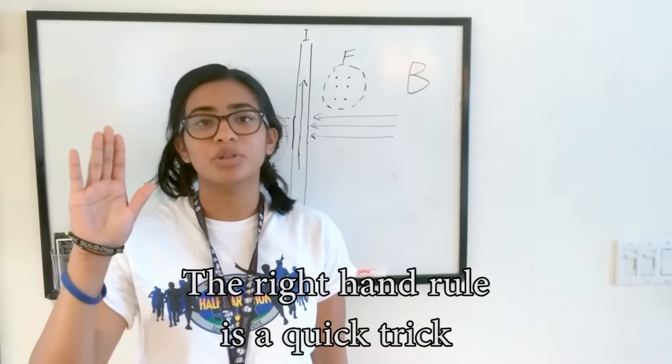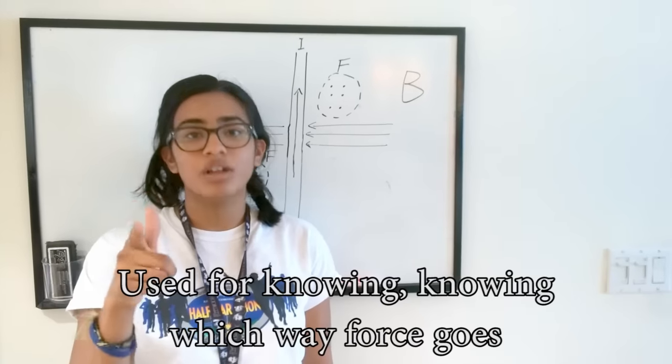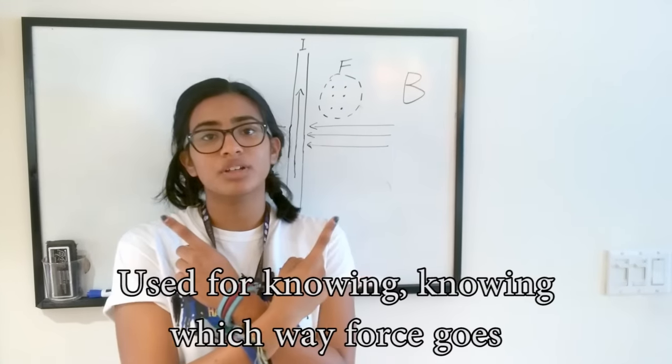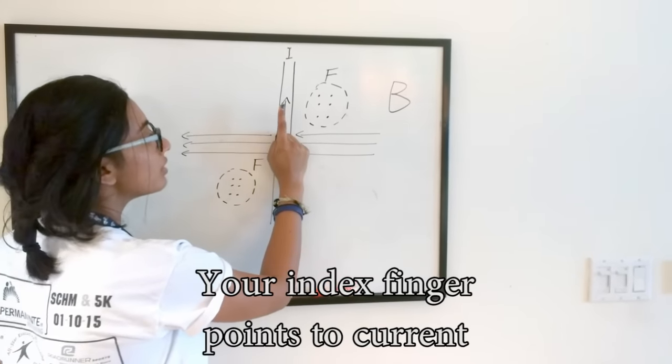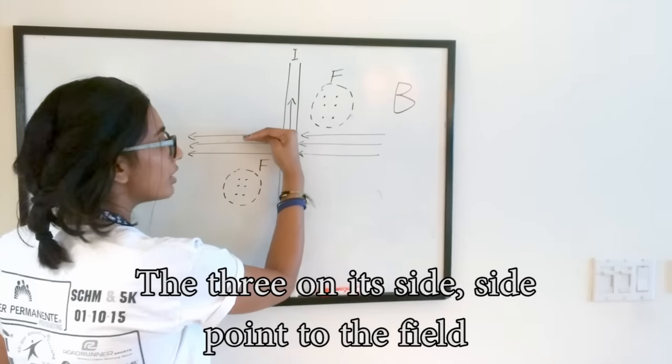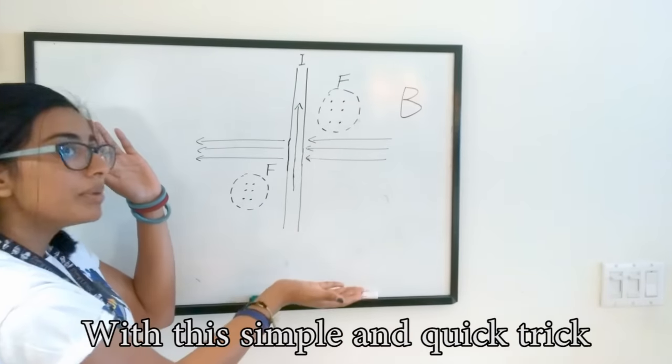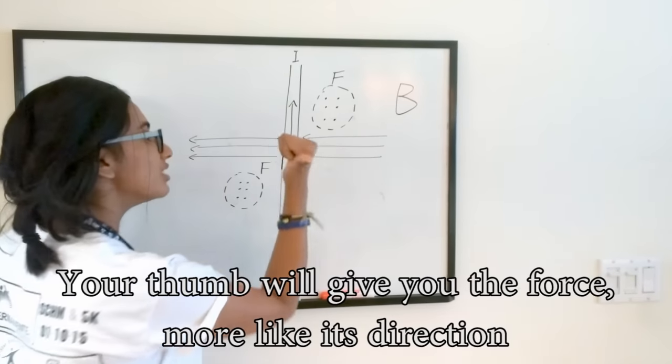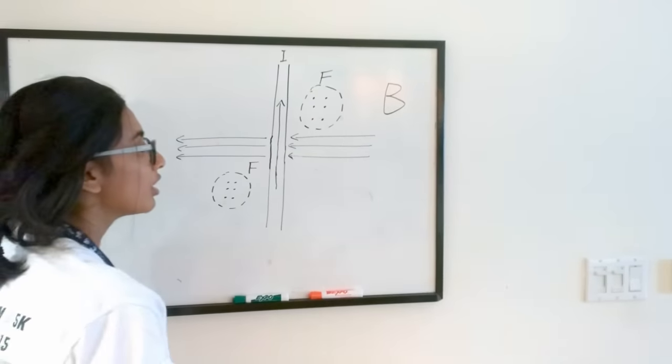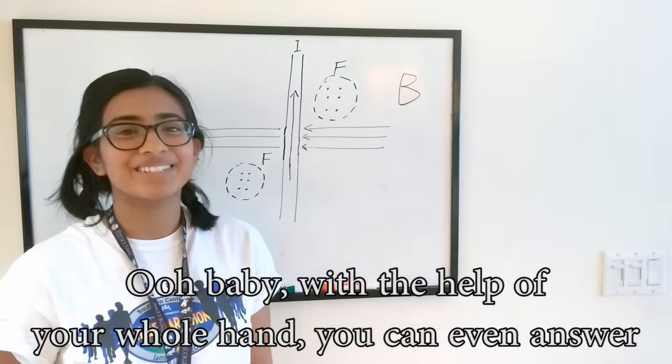The right-hand rule is a quick trick used for knowing which way force goes. Your index finger points to current, the three on its side point to the field. With this simple and quick trick, your thumb will give you the force, more like its direction. Ooh baby, with the help of your own hand, you can even answer an easy smear problem.